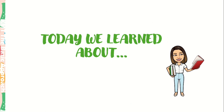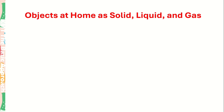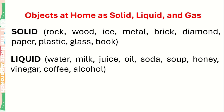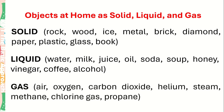What have we learned today? We learned about objects at home as solid, liquid, and gas. Solid: rock, wood, ice, metal, brick, diamond, paper, plastic, glass, and book. Liquid: water, milk, juice, oil, soda, soup, honey, vinegar, coffee, and alcohol. Gas: air, oxygen, carbon dioxide, helium, steam, methane, chlorine gas, and propane.